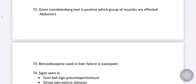The question described the Trendelenburg test and it is positive, and asked which group of muscles are affected. Here the muscles affected are gluteus medius and minimus. These are abductors. So the group of muscles affected are abductors.